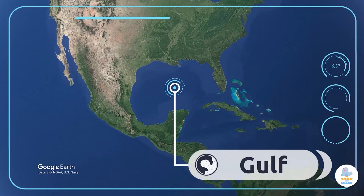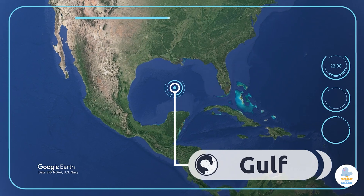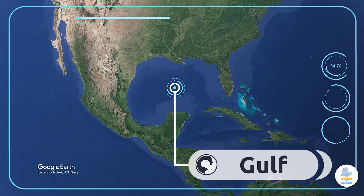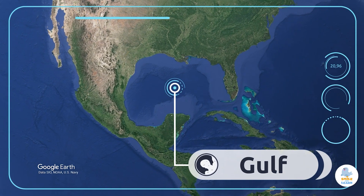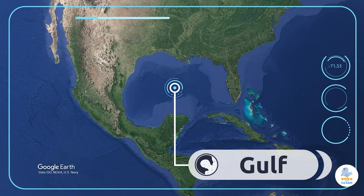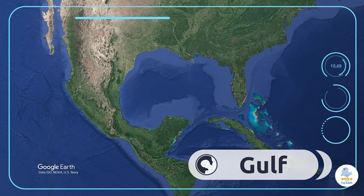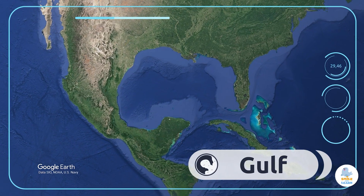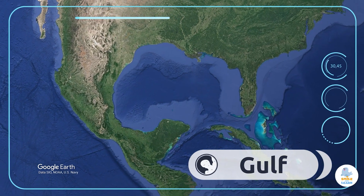Gulf. A gulf is part of the sea that extends into the land enclosed by two capes. That's the Gulf of Mexico — impressive!